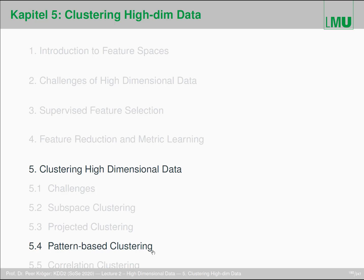Correlation clustering will focus on arbitrary oriented clustering. Pattern-based clustering is somehow in between, as we will see, because those methods follow some other intuition — which, however, as we will also see, is extremely related to all the other stuff.